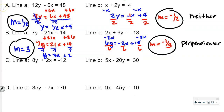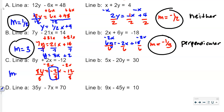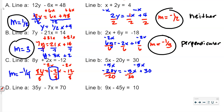Continuing to the next pair: subtracting 2x from both sides gives 8y equals negative 2x minus 12, dividing by 8 gives m equals negative 1 fourth. For the other equation, subtracting 5x gives negative 20y equals negative 5x plus 30, dividing by negative 20 — a negative divided by a negative is positive — gives slope positive 1 fourth. Comparing negative 1 fourth and positive 1 fourth: they're not reciprocals, so this is neither.